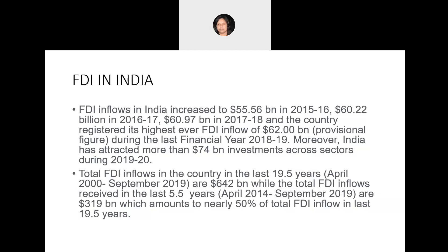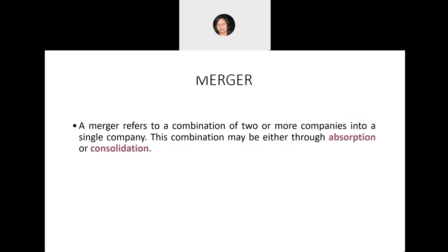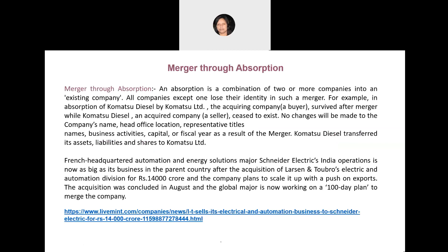There is another very important form of foreign direct investment which we call mergers and acquisitions. In today's class our focus will be on understanding mergers and acquisitions, particularly cross-border mergers and acquisitions. We will define the terms: a merger is a combination of two or more companies into a single company, and this combination can happen either through absorption or consolidation.